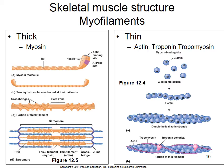Here we have the actual sarcomere. In tan we have the thick filaments and in blue the thin filaments, which are thinner than the thick filaments. Titin is also shown here as a spring — it keeps sarcomeres from being pulled apart and is a highly elastic protein.